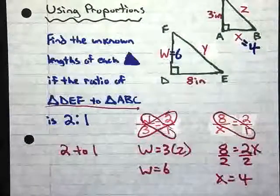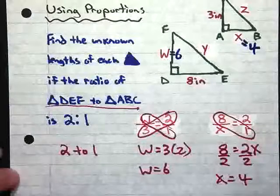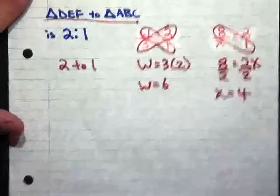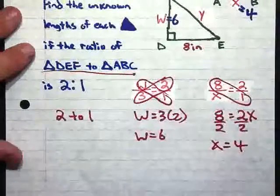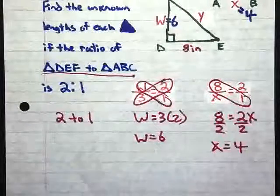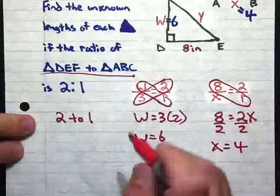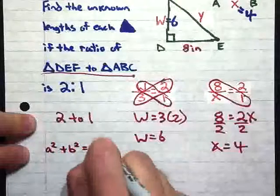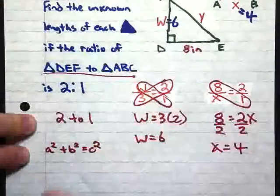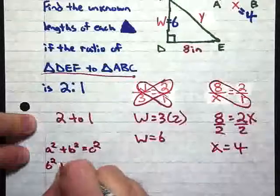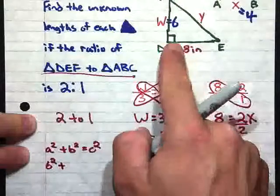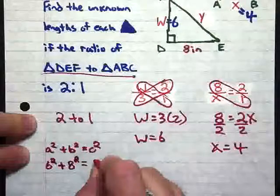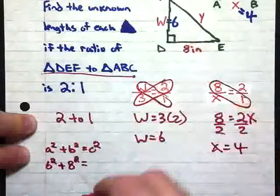So now we want to solve for Y and Z. And the only way that we can do that right now, because we don't have a length of either one, is to use Pythagorean's Theorem. So let's look at our large triangle first. So Pythagorean's Theorem is A squared plus B squared equals C squared. So A is going to be 6, so we've got 6 squared, plus B squared, which is 8, because those are the 2 sides that make up our legs. That gives us A and B. So 8 squared equals C squared, which in this case is going to be Y. So Y squared.